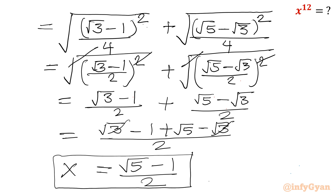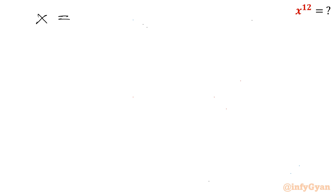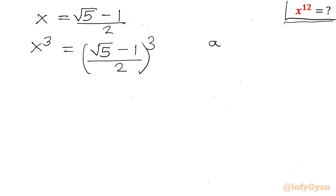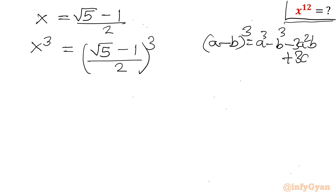Plus and minus √3 will cancel. So our x comes out to (√5 minus 1)/2. Now our target expression is x to the power 12. Let me write x equal to (√5 minus 1)/2, and we have to find x to the power 12. First I will calculate the value of x³. So (√5 minus 1)/2 — I will use the (A minus B)³ formula, which equals A³ minus B³ minus 3A²B plus 3AB².